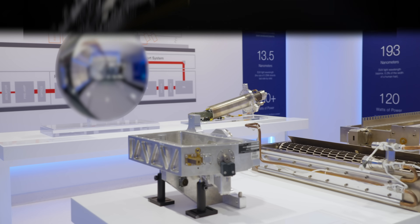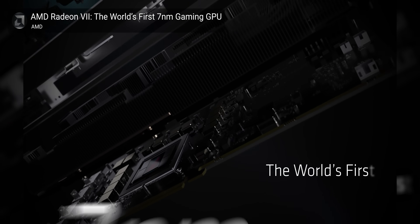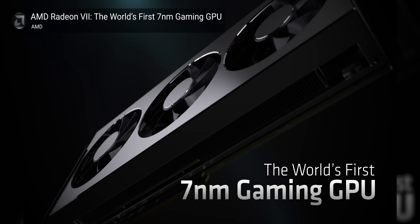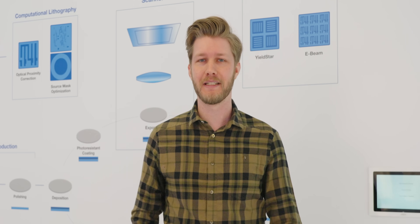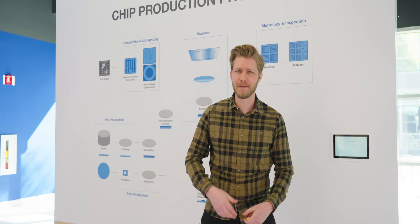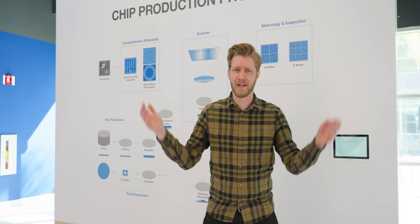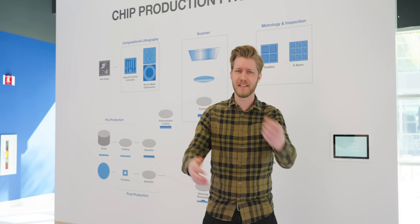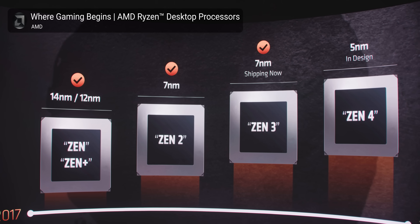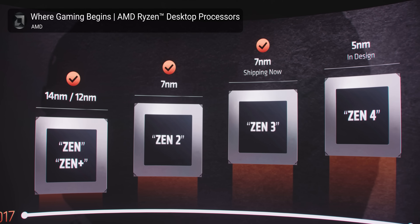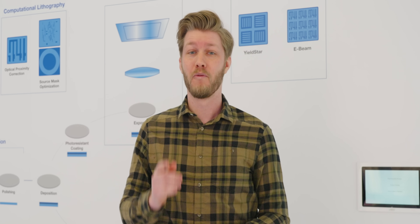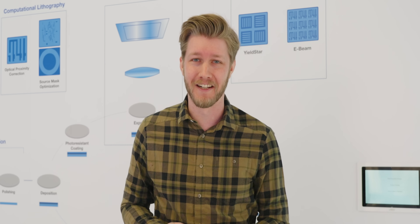When you hear AMD or NVIDIA are producing seven nanometer chips, it's really easy to just be like, yeah, they always keep on making smaller transistors every single year and technology goes on. But how the heck do they make a transistor that small? With great difficulty.